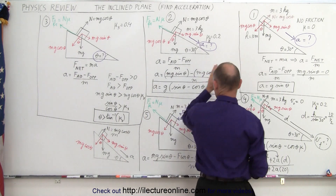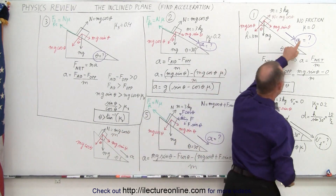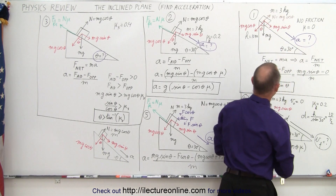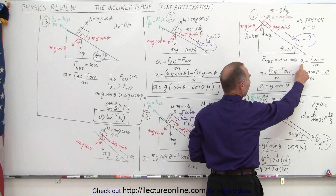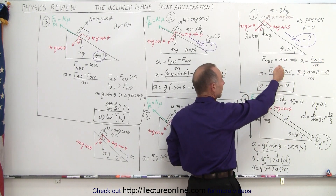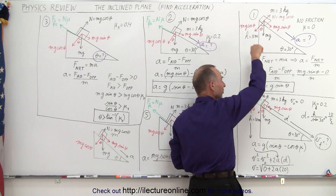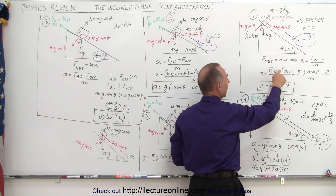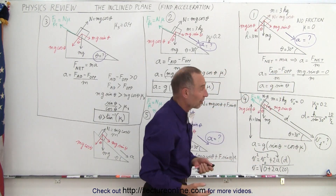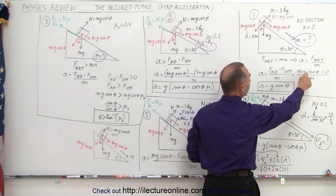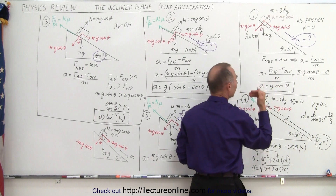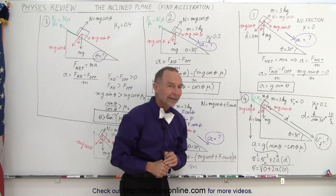In our first example, we have a simple case where there's no friction and only one force aiding the acceleration. The acceleration is equal to the net force divided by the mass. The net force means we take all the forces aiding acceleration — pointing in the same direction as acceleration — and subtract all the opposing forces. In this case there are no opposing forces, only the aiding force. So the acceleration equals mg sine theta divided by m, or simply acceleration equals g sine theta.